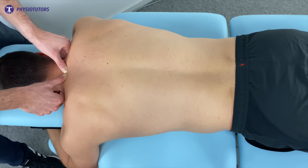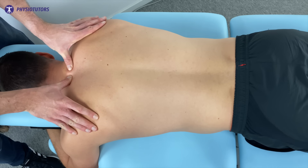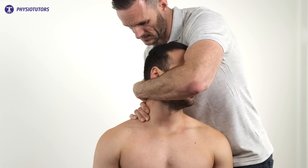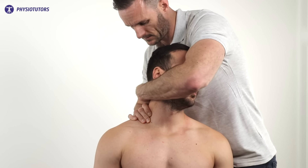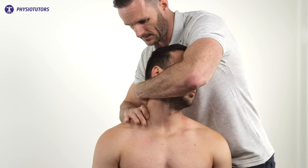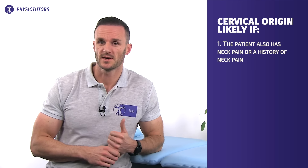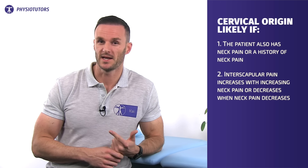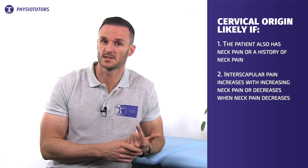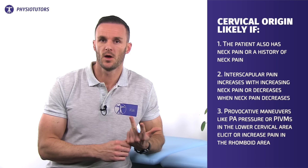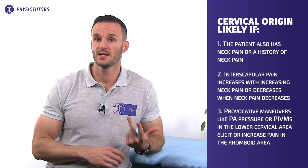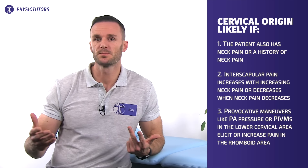Third, a nociceptive stimulus at the cervical area should refer pain to the rhomboids. A way to examine this is by performing PA pressure on the cervical level C4 and lower. And if you're a manual therapist, you would want to perform PIVMs in 3D extension with the goal of eliciting an increase in pain in the interscapular area. To summarize, rhomboid pain coming from the cervical area is likely if: number one, the patient also has neck pain or a history of neck pain; two, interscapular pain increases with increasing neck pain or decreases when neck pain decreases; and number three, provocative maneuvers like PA pressure or PIVMs in the lower cervical area elicit or increase pain in the rhomboid area.